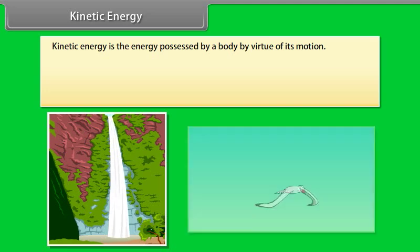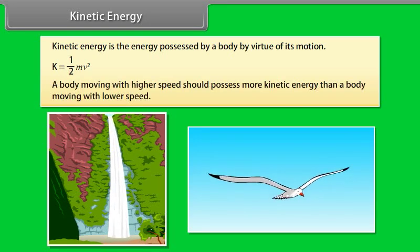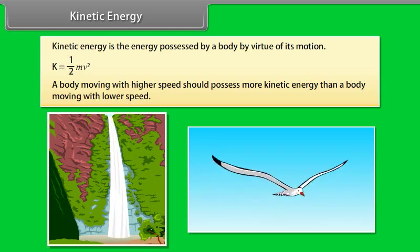Kinetic energy. Kinetic energy is the energy possessed by a body by virtue of its motion. Kinetic energy = ½mv². Running water, flying bird are few examples of bodies possessing kinetic energy. It is logical that a body moving with a higher speed should possess more kinetic energy than a body moving with lower speed.